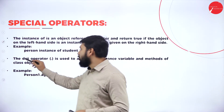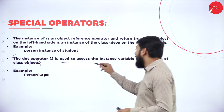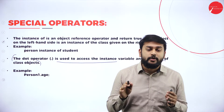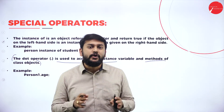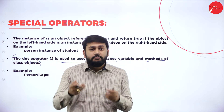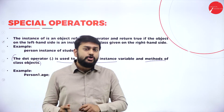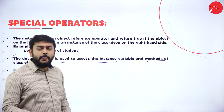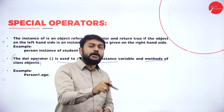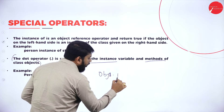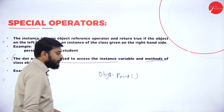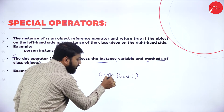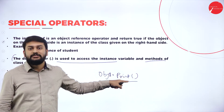The special operator is the dot (.) operator. This is very important: the dot operator is used to access the instance variable and methods of a class object. For example, if I have multiple objects — object one, object two, etc. — and a method called 'print', I write 'obj1.print()' to specify that object one is accessing the print method.